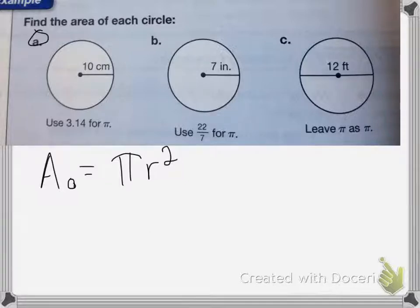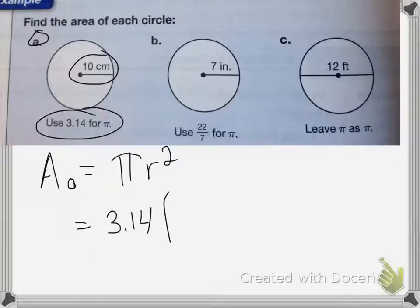So for A, it gave us the radius as 10 centimeters and it wants us to use 3.14 for pi. So I'm going to put that in. So pi is 3.14 and I'm going to multiply that by 10 squared.